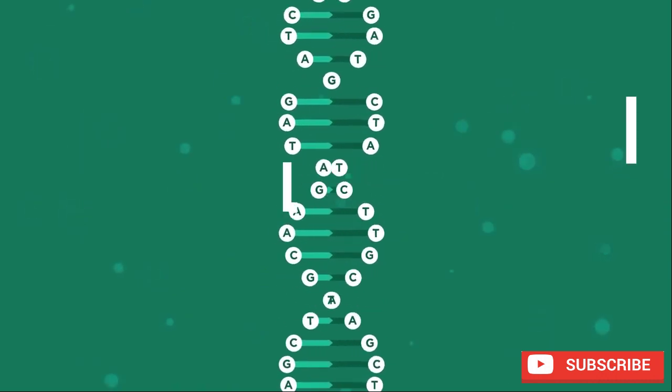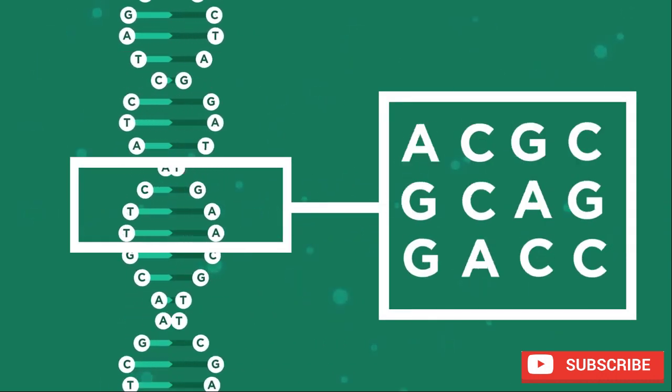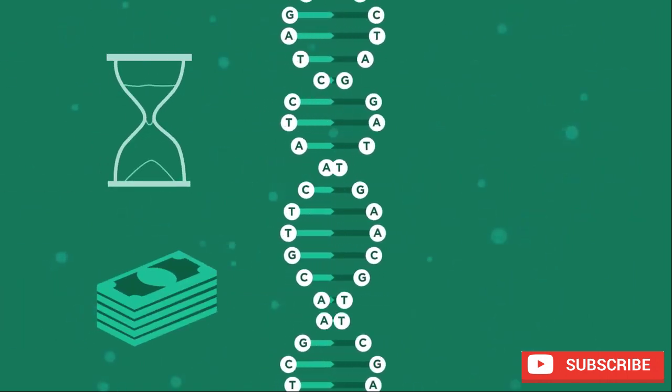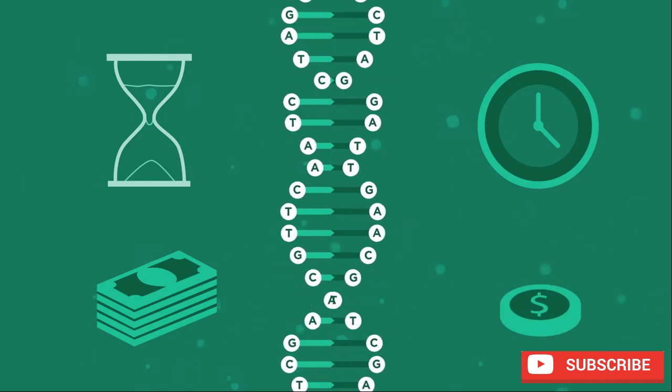There have been major advancements in DNA sequencing since the Human Genome Project ended. It took 13 years and billions of dollars to sequence a whole genome during the project, but now scientists can do it in a matter of hours. And you can even get yourself sequenced for a small fee.